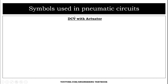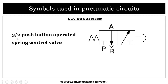Now let's look at direction control valves with actuators. Here is the symbol of a three-by-two DCV. Port P is the pressure port, port R is the return port, and port A is the outlet port — giving a total of three ports. There are two boxes representing two positions, making this a three-by-two DCV.